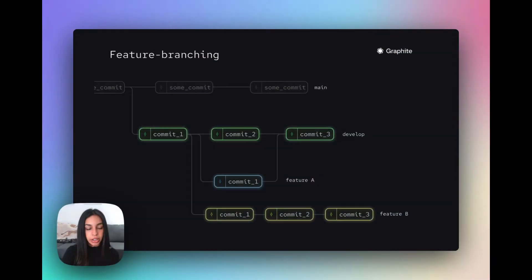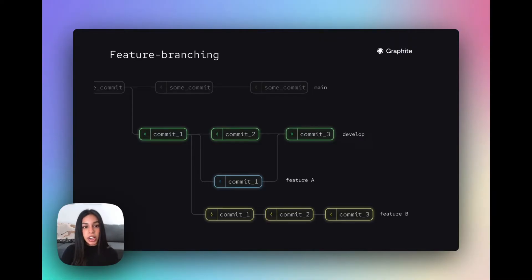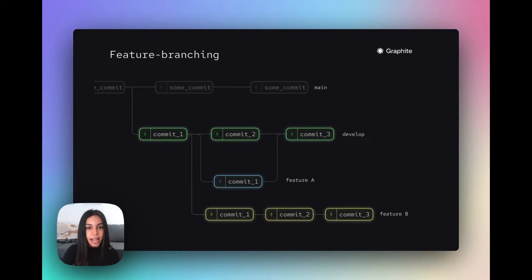Before we get started, what are stacked PRs? Many developers today use what's called a feature-based workflow where a developer creates a branch that contains all of the changes for the feature they're creating. The branch is usually pretty large, long-lived, hard to review since there's so much code, and a pain to merge into production after it's been approved. It's also hard to parallelize dependent tasks and collaborate with other engineers, since the dev needs to wait for their feature branch to be approved and merged before starting a new task or handing things off to a teammate.